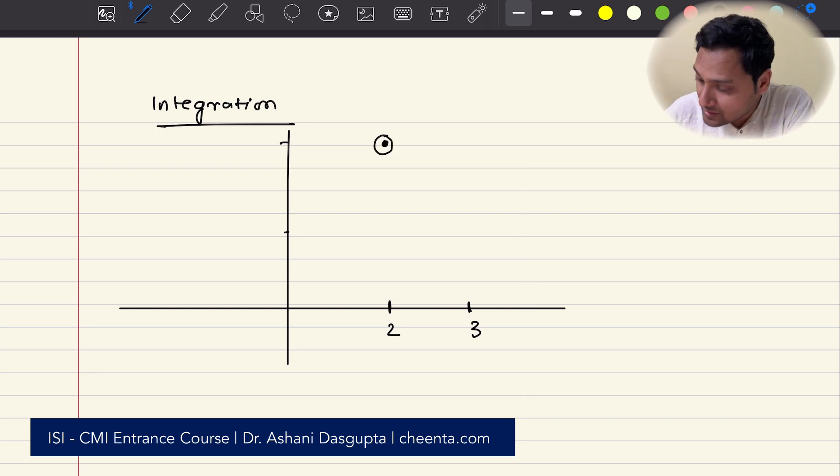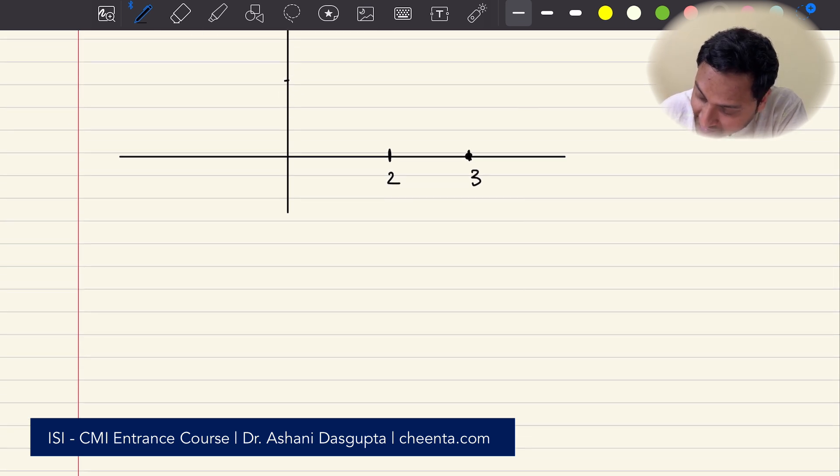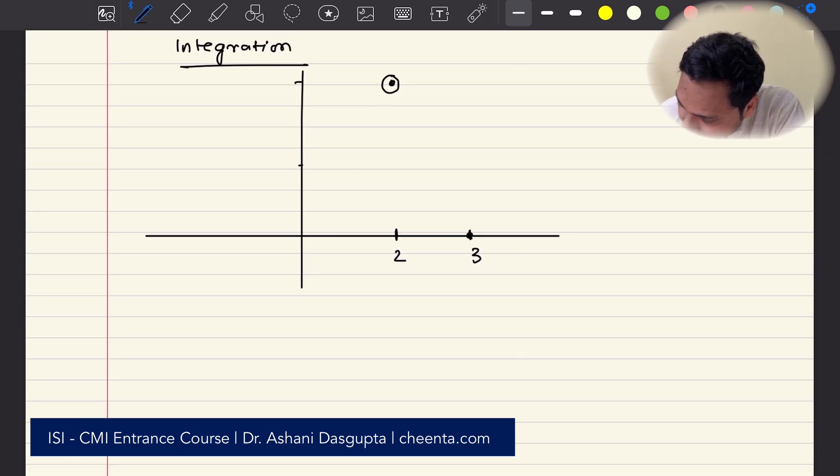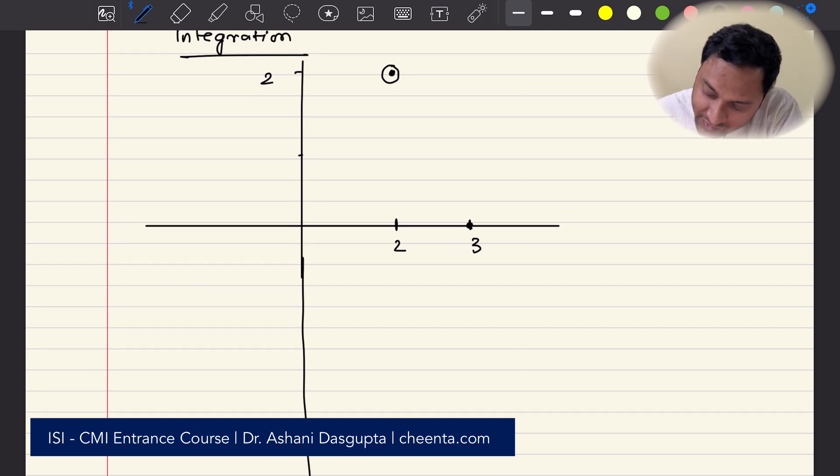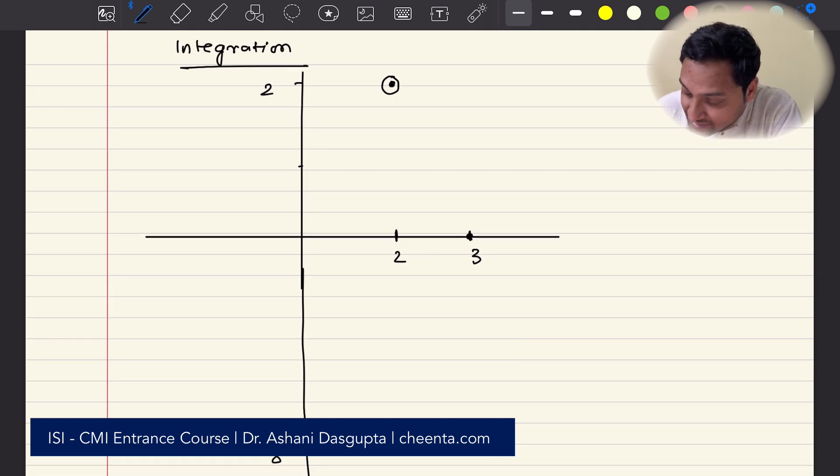That's given. And it's given that f of 3 is minus 8. So, it's kind of here, somewhere here. So, if I go down, it's minus 8 here. This is 2. So, f of 2 is 2, and f of 3 is minus 8. Okay, now, it's also given that the function is 1 to 1. So, what does that mean? What does it mean to say the function is 1 to 1?